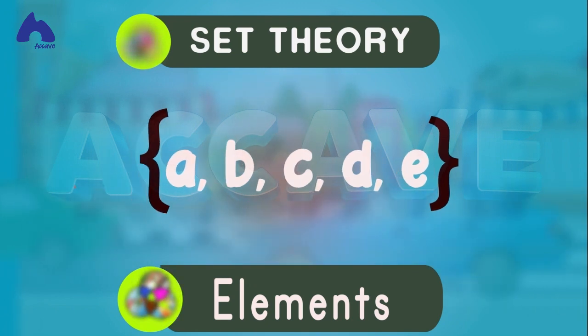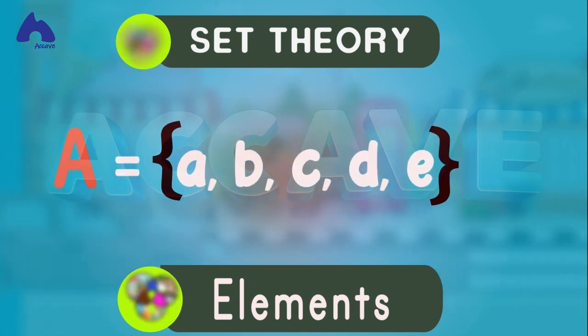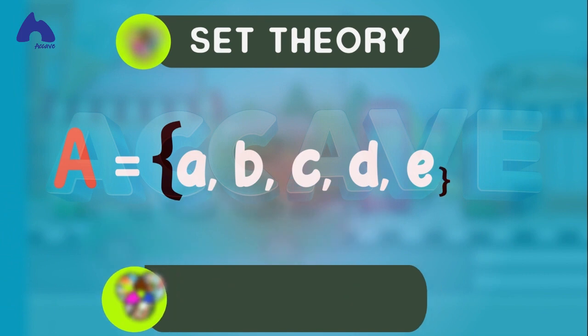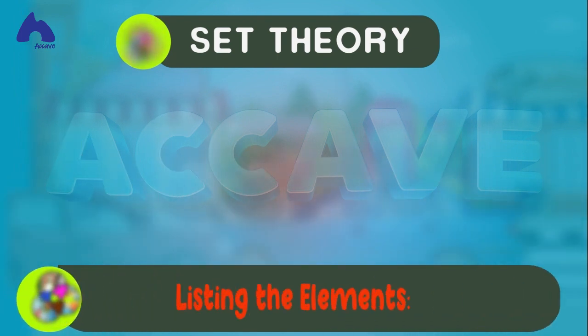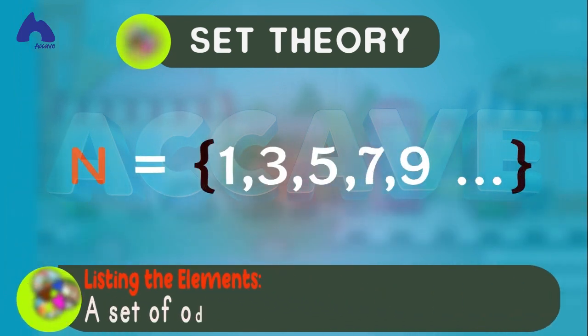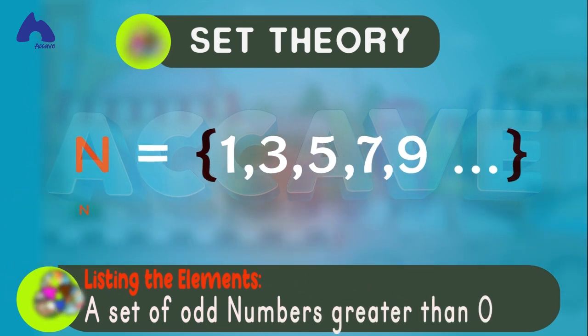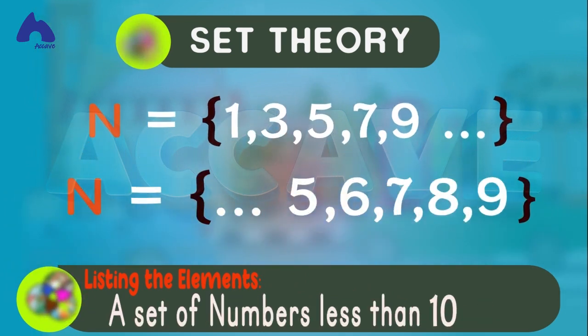Sets are usually named with capital letters and they can be described in several ways. It can be described by listing the elements, for example, a set of odd numbers greater than zero or a set of numbers less than 10.